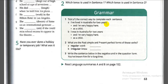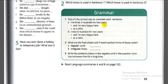Take the correct ending to complete each sentence. For example: 'I've lived in Australia for two years — and I'm very happy here.' Or: 'I was in Australia for two years — as a child.' In sentence one, the present perfect is used; in sentence two, the past simple is used.